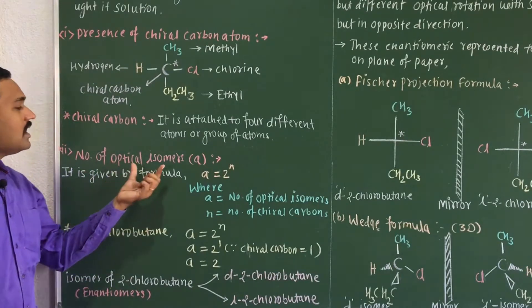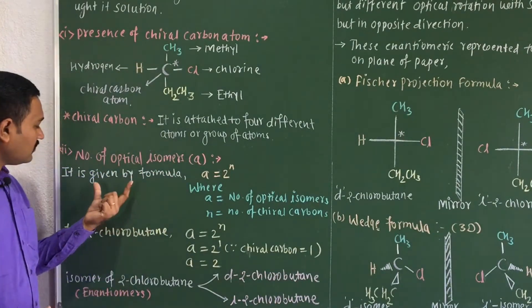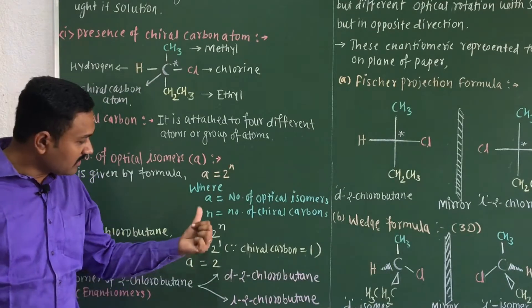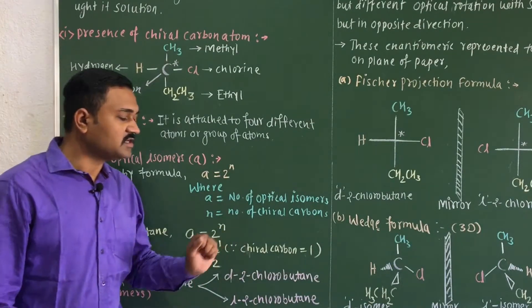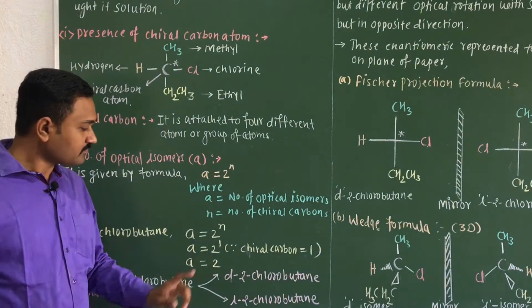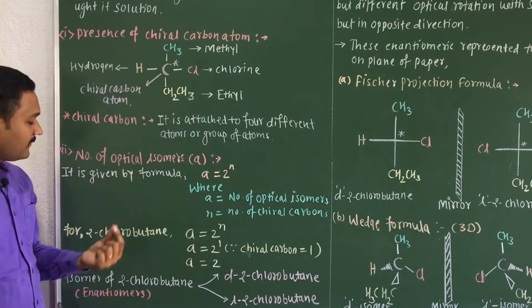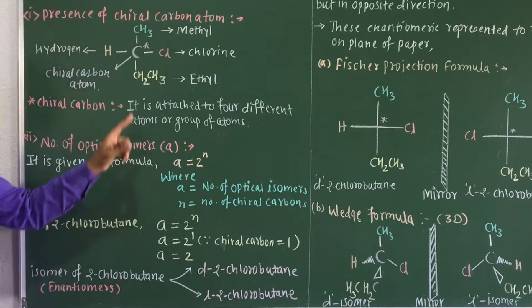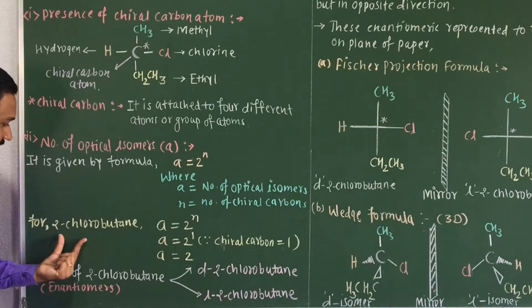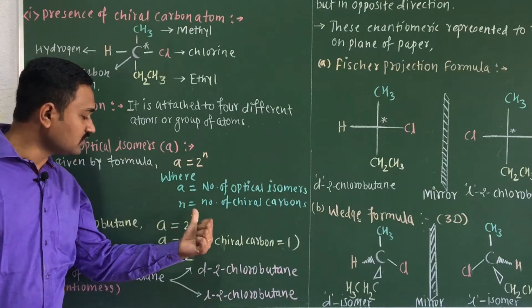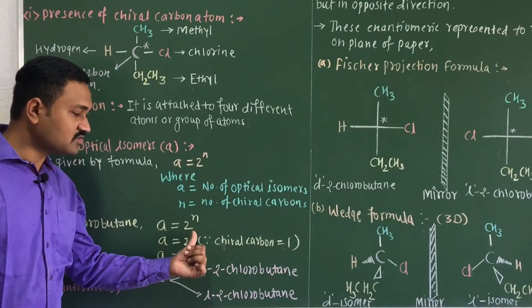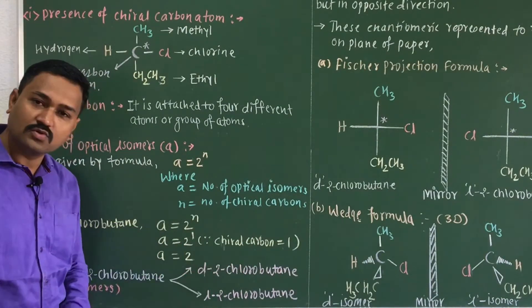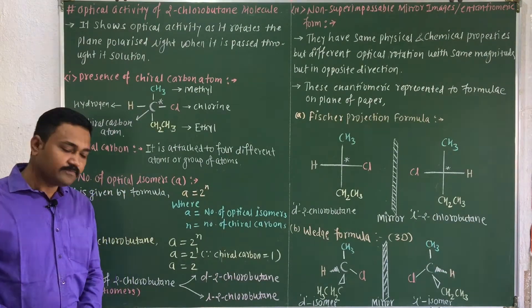Optical isomers are given by the formula a = 2ⁿ, where 'a' represents the number of optical isomers and 'n' represents the number of chiral carbon atoms. For 2-chlorobutane, there is only one chiral carbon atom — represented by an asterisk — so n = 1. Therefore a = 2¹ = 2, meaning 2-chlorobutane shows two different optical isomers.